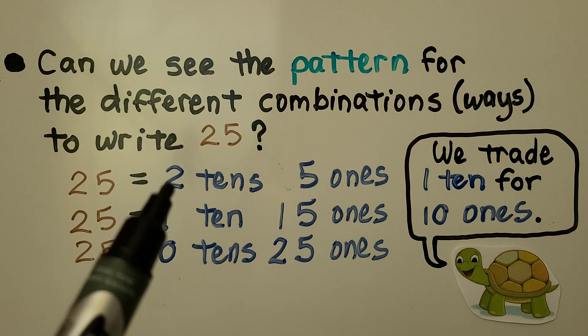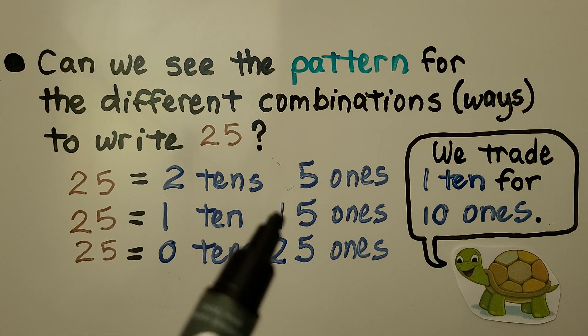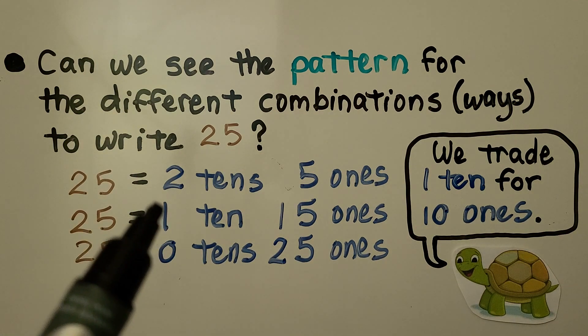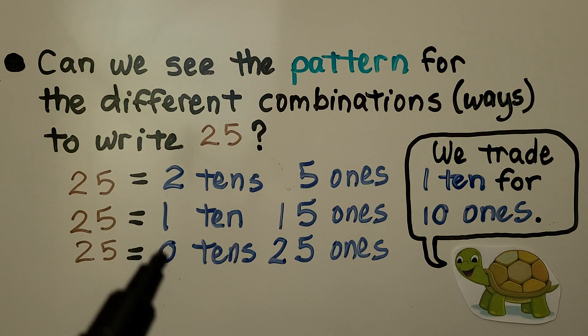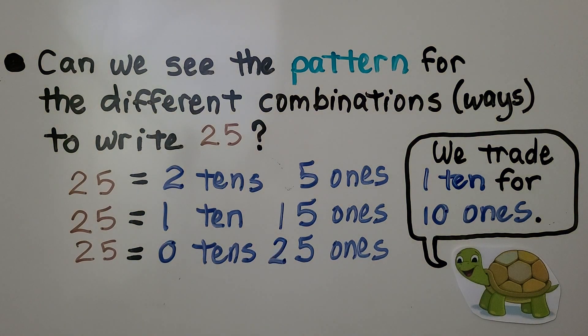We're taking away a 10. We had 2, now we have 1, and we're giving it to the ones. And now there's a 2 here. So we can see a pattern.